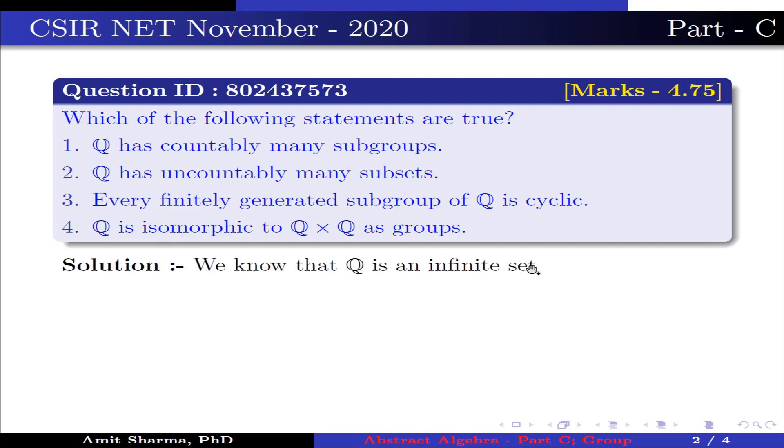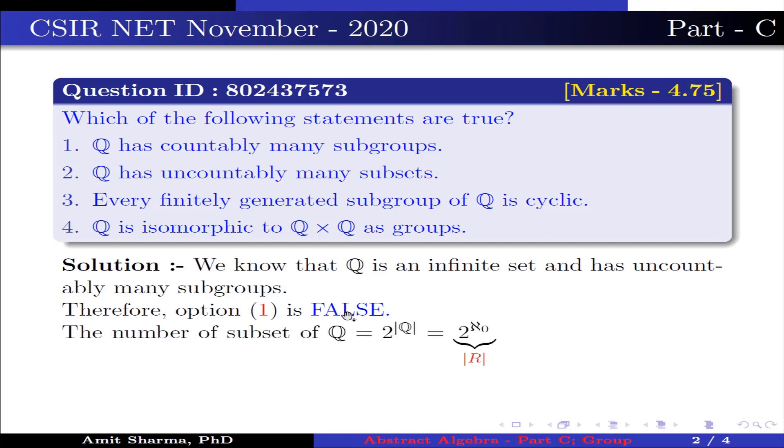We know that Q is an infinite set and has uncountably many subgroups. Therefore, option 1 is false. The number of subsets of Q is equal to 2 to the power cardinality of Q, which equals 2 to the power aleph naught. This is the cardinality of R, which is uncountable. This implies Q has uncountably many subsets. Therefore, option 2 is true.